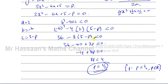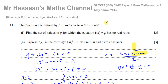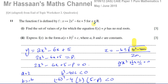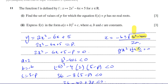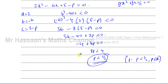To summarise: you use the discriminant to determine how many roots a quadratic has. If b² − 4ac > 0, it has two distinct real roots. If b² − 4ac = 0, it has one repeated root. If b² − 4ac < 0, it has no real roots. Here, we set f(x) = p, rearranged to equal zero, then applied the discriminant condition.